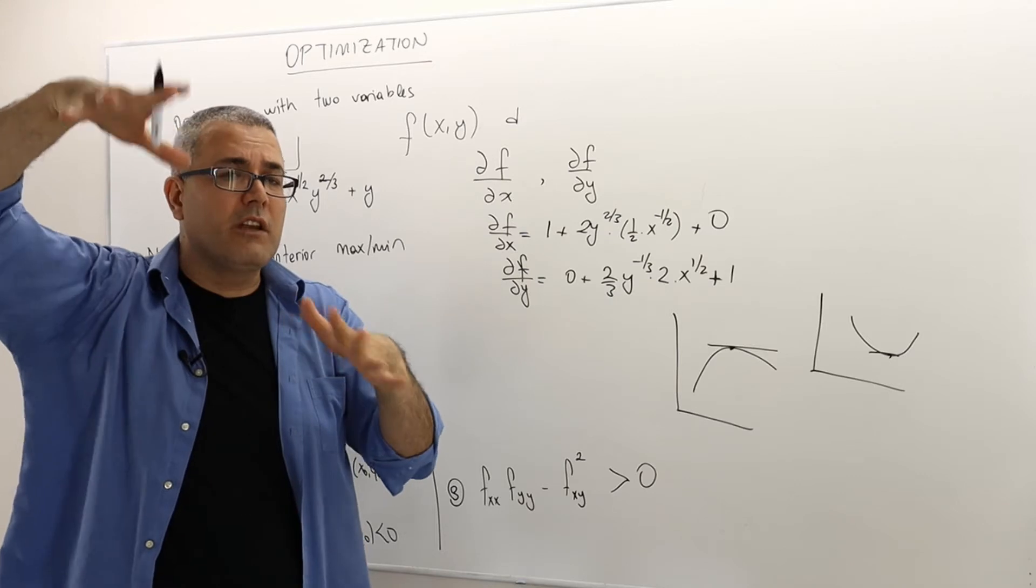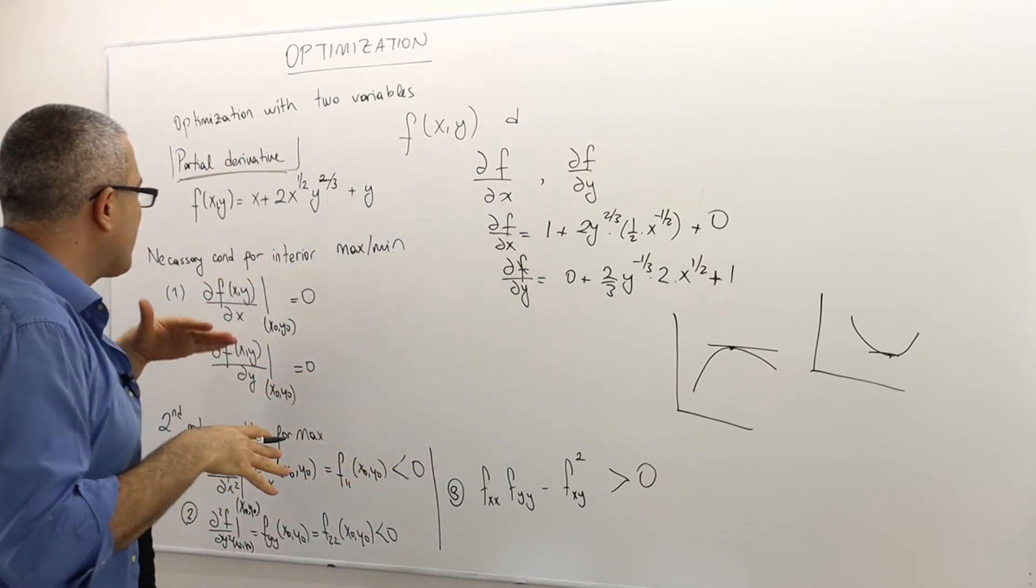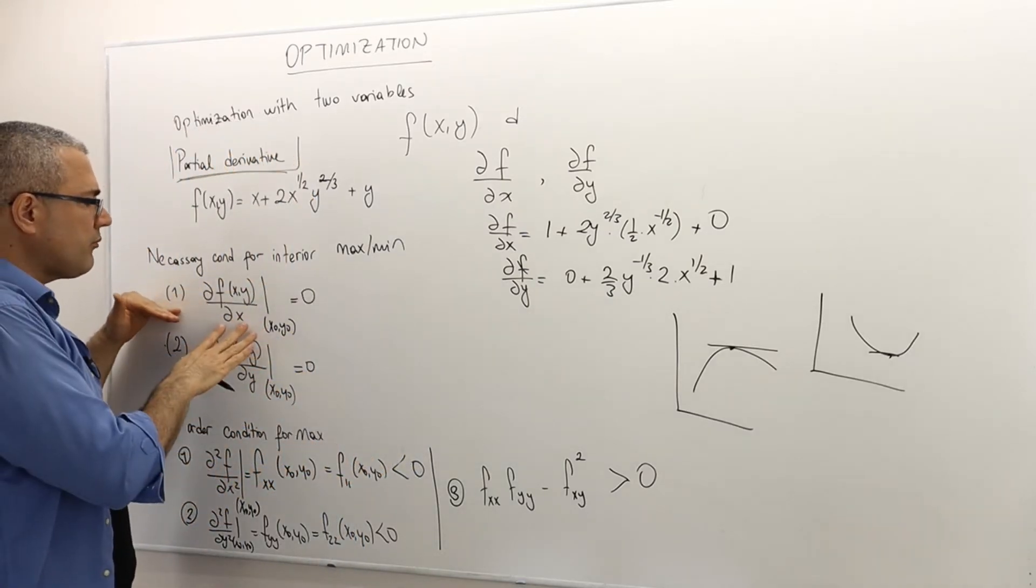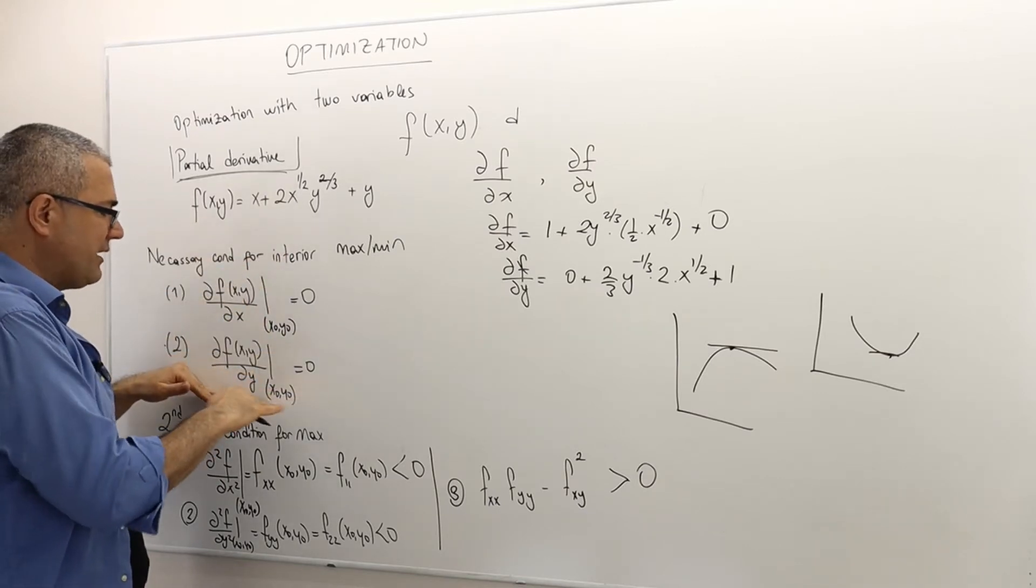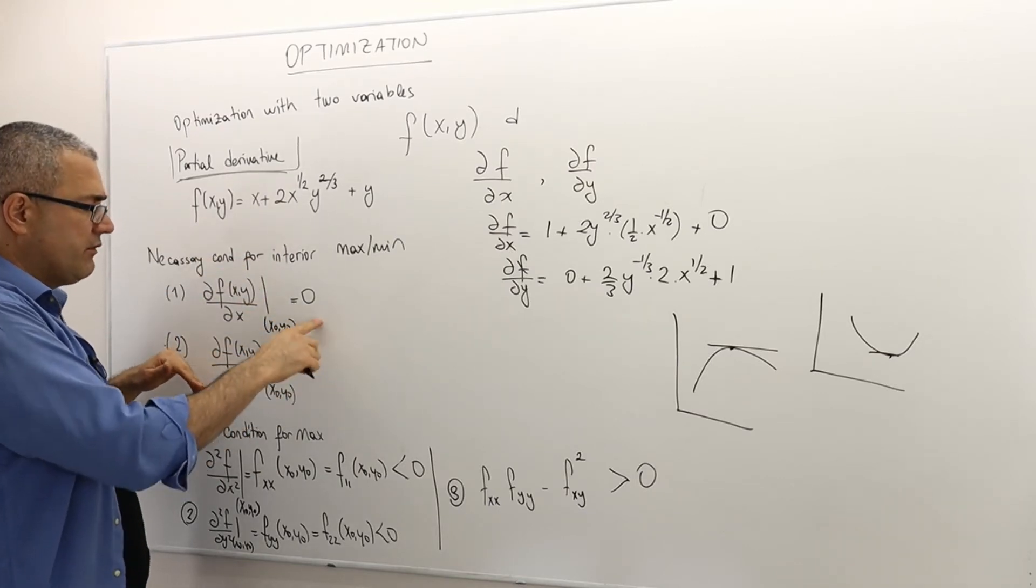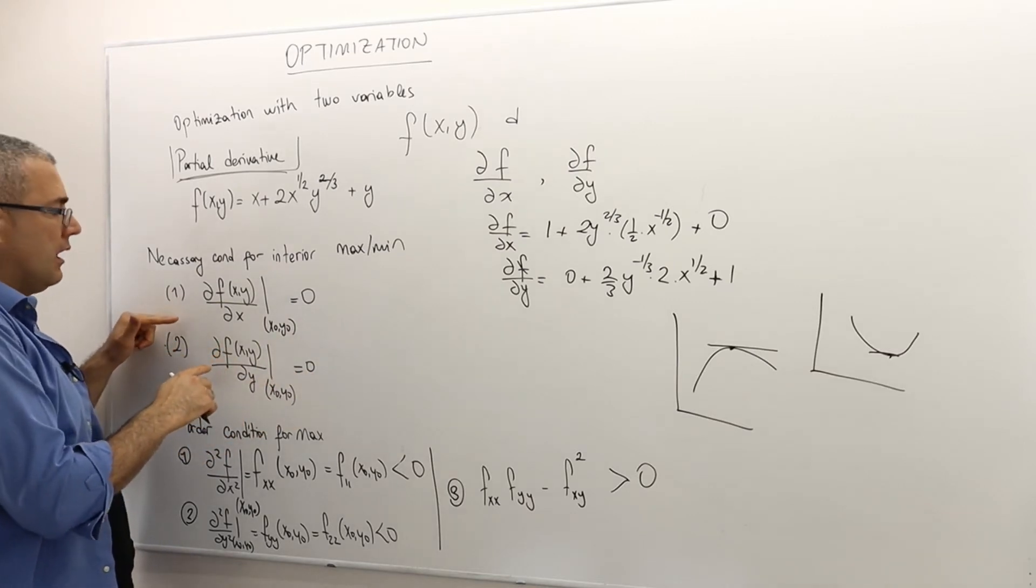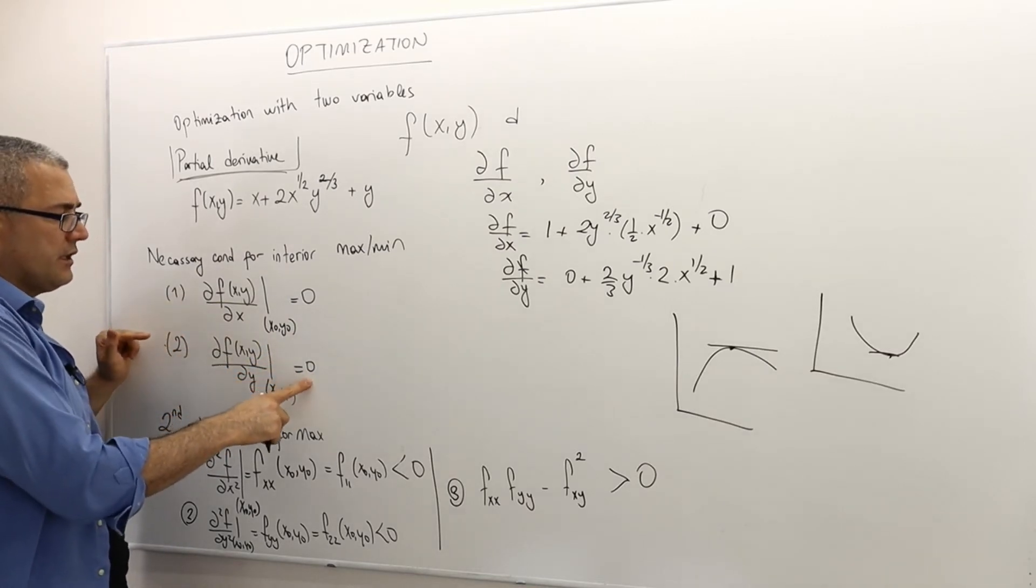So similarly here, I have a two-variable function, but I have three-dimensional graph. In a three-dimensional graph, what I need is that the slope in x dimension only and y dimension only are 0. So therefore, the partial derivatives are 0.